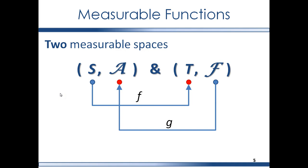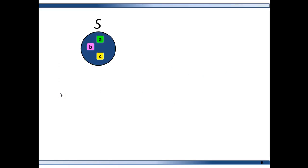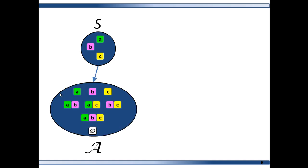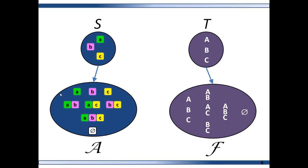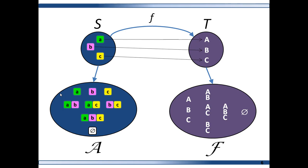That's what makes this whole thing a measurable function. Let's do an example. On the left we have the measurable space (S, A): S is the original domain, A is the sigma algebra. On the right we have the measurable space (T, F): T is the original domain, F is the sigma algebra. f is the measurable function if it is a function from S to T. Little a maps to big A, little b maps to big B, and little c maps to big C. But f is not a measurable function yet — right now it's just a function.